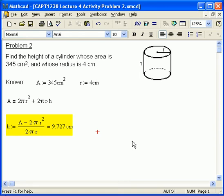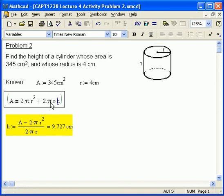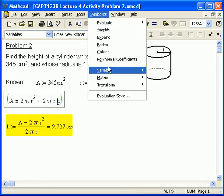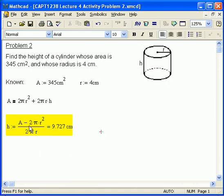So this is a very general methodology in this specific example that I want you to use. The methodology is: put in the variables that you know, identify what variable you don't know, that's H, put in the equation that relates all three variables or as many variables as you have, and then use this symbolics variable solve function to create an expression for the variable you've isolated.